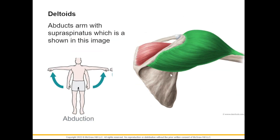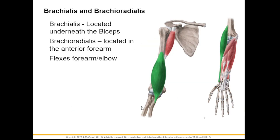For the upper extremity we have the deltoid, which is an inverted triangle shape. The main job of the deltoid is abduction, and the other muscle for abduction is the supraspinatus — there are only two muscles for abduction: deltoid and supraspinatus. Next we have the brachialis and brachioradialis. The brachialis is located underneath the biceps, and the brachioradialis is attached to the radial bone. Their job is to flex the forearm or the elbow.